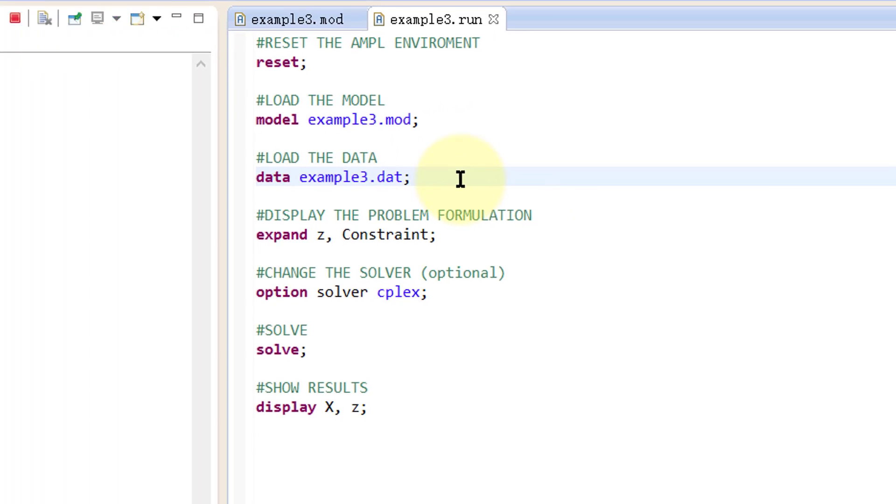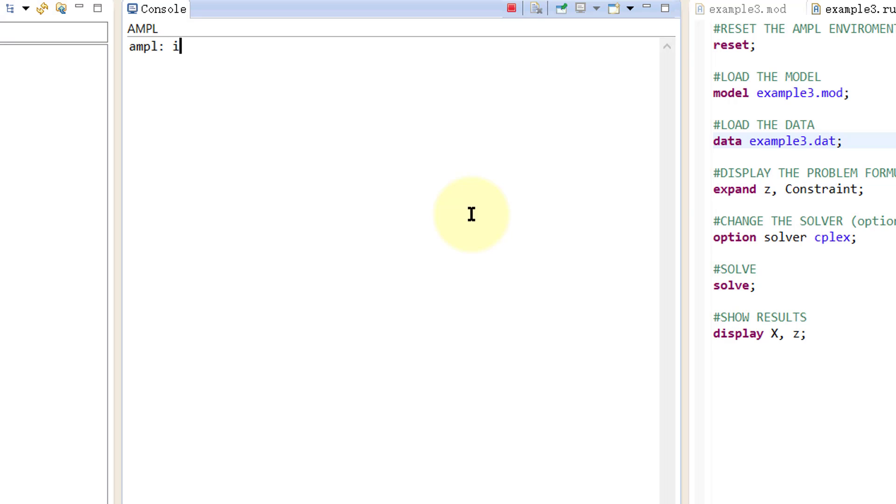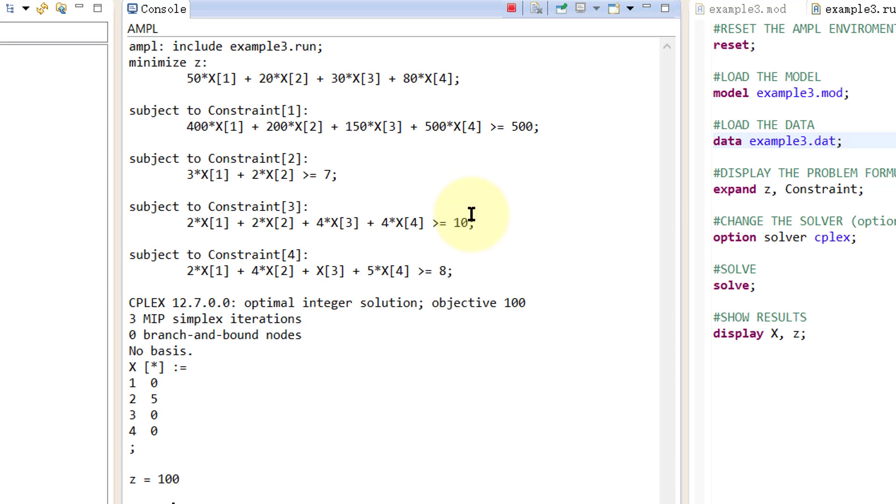Now finally, we type include example3.run semicolon in the command window and hit enter. From the output here, we can see that the optimal solution is x2 equals 5, x1, x3, and x4 are all equal to 0, and z equals 100. All the same variables are integer numbers.